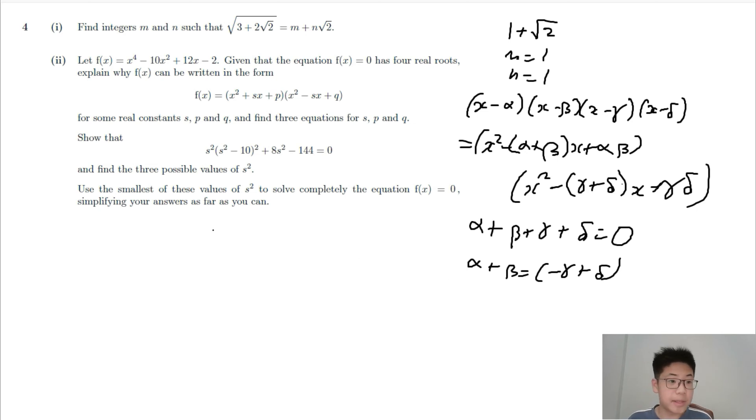This means that pq equals -2, sp - q equals -12. So this means that p + q - s² equals -10. Therefore, p + q equals s² - 10.